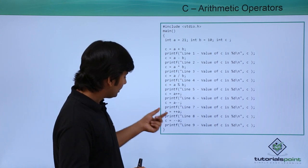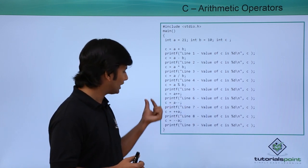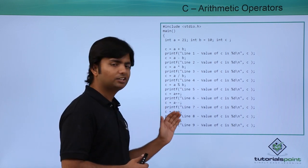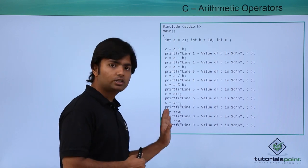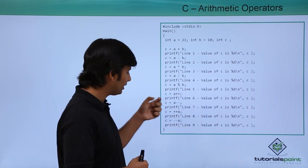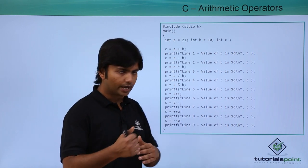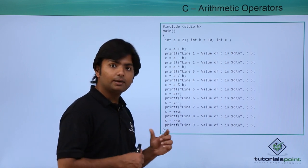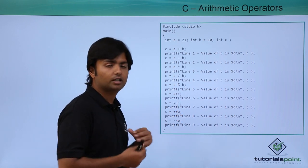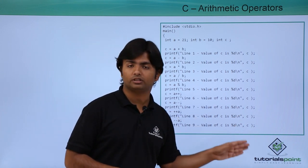Here you can see plus-plus a — this is pre-increment, meaning before assigning the value to c the value of a will be incremented. So 21 will first become 22, then the value will be assigned to c. In line 8 you will observe you are getting 22 in the result. In line 9 there is pre-decrement: the decrement happens before the assignment. So 22 will become 21 again and then the value is assigned to c.